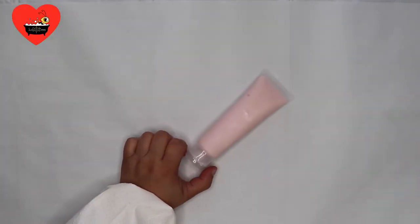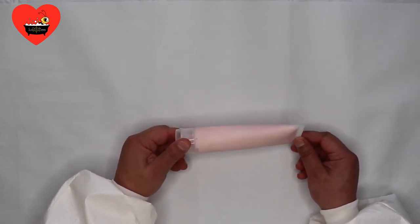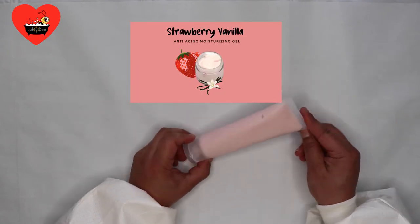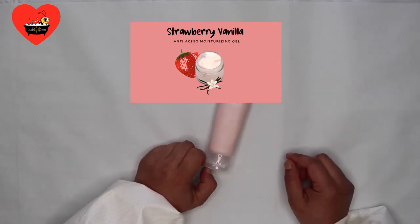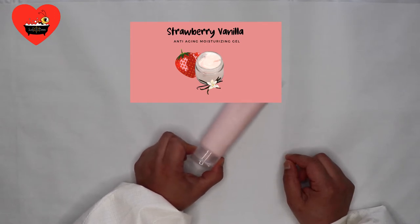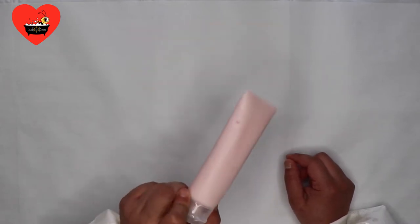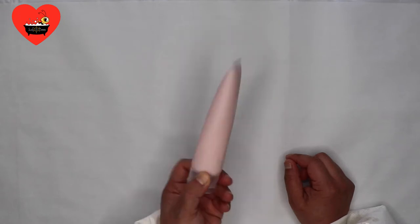Hi, this is Monica. Welcome back to my channel, Suds and Bees. In today's video, we will be making a strawberry vanilla face wash gel. If you remember a few weeks ago, I made an anti-aging moisturizing gel with strawberry and vanilla floral water. I have been using the moisturizing gel every day and I can't get enough of that scent.